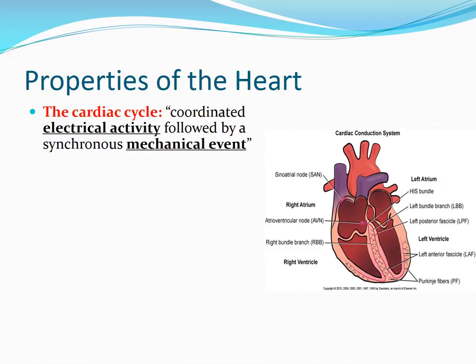Remember, our heart is a pump. It needs to squeeze — it needs to contract to get blood out to the rest of our body. So in order for that contraction to happen, we need electricity and action potentials to cause contraction of those cells and of that muscle. This sequence of events, this coordinated electrical activity, is called the cardiac cycle.